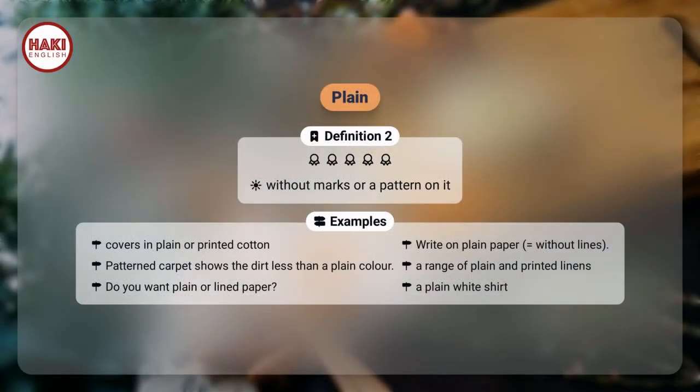Definition 2: Without marks or a pattern on it. Examples. Covers in plain or printed cotton. Write on plain paper, equals without lines.